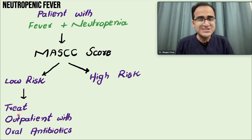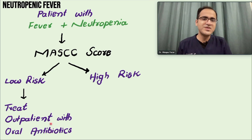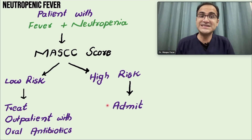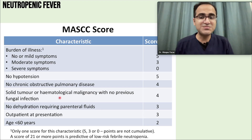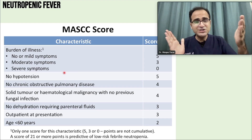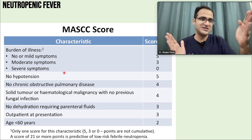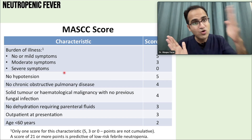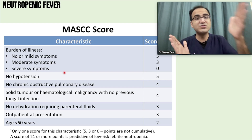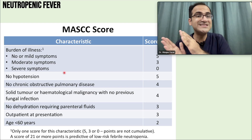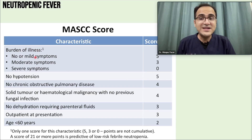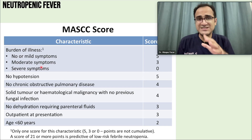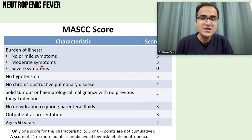A low risk patient is treated outpatient — that patient goes home on oral antibiotics. A high risk patient needs to be admitted and treated in hospital. The MASCC score judges the patient on certain criteria: the healthier the patient is, the more score they get, and the lower the risk. Burden of illness — mild or no symptoms scores five, severe symptoms scores zero.